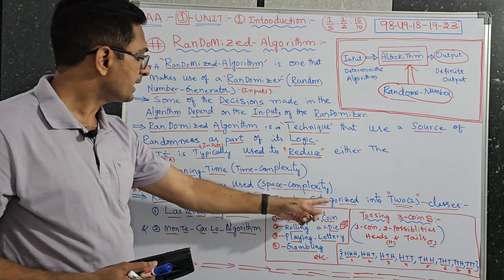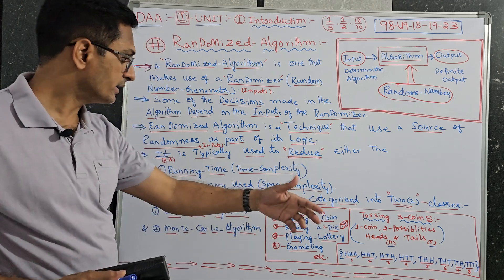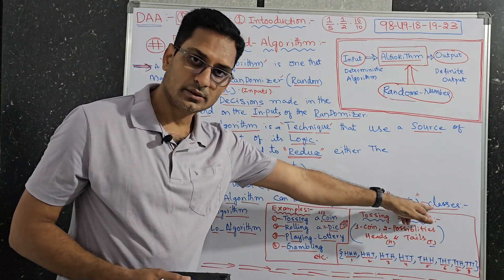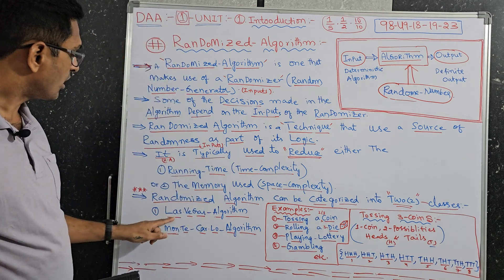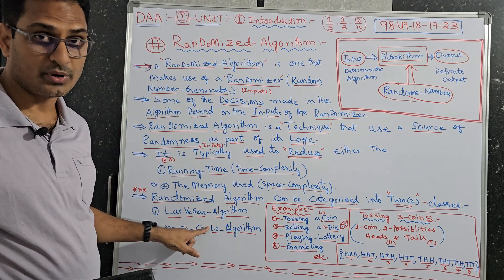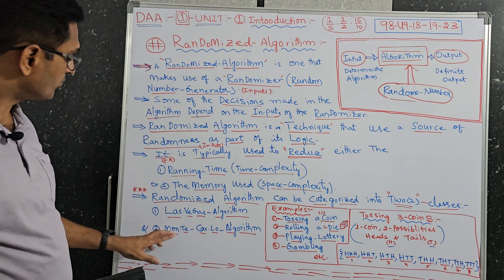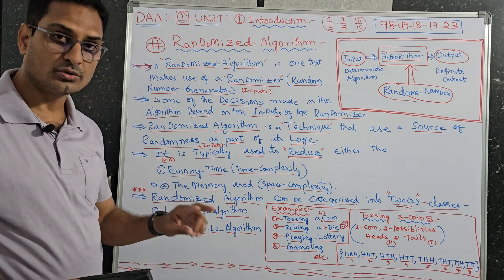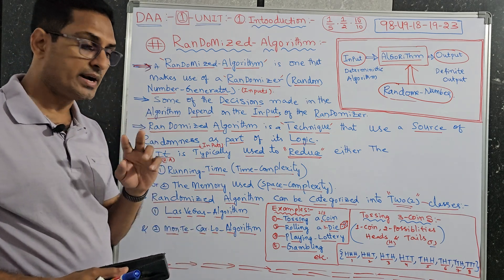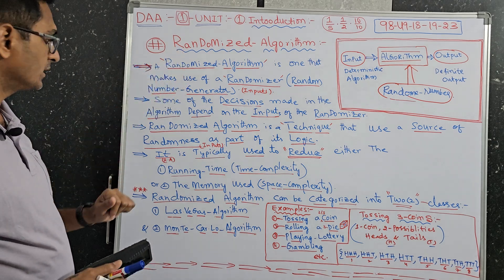Randomized algorithm can be categorized, classified into two classes. One is Las Vegas algorithm, very very important. And the second one, Monte Carlo algorithm. These two are classified for this randomized algorithms.